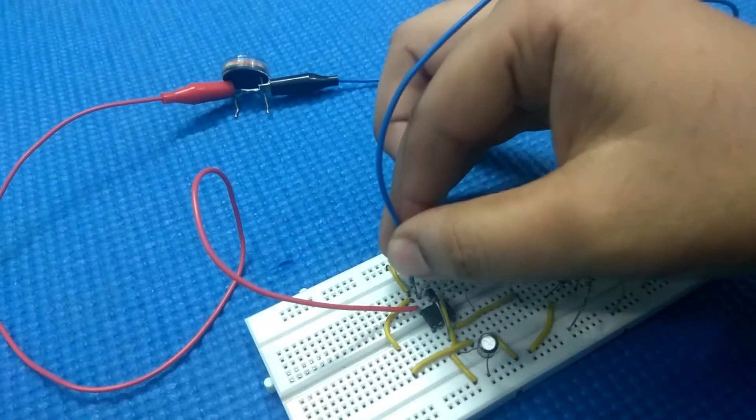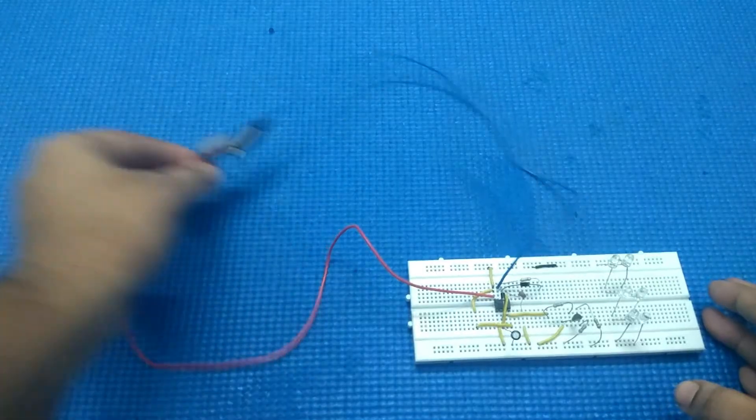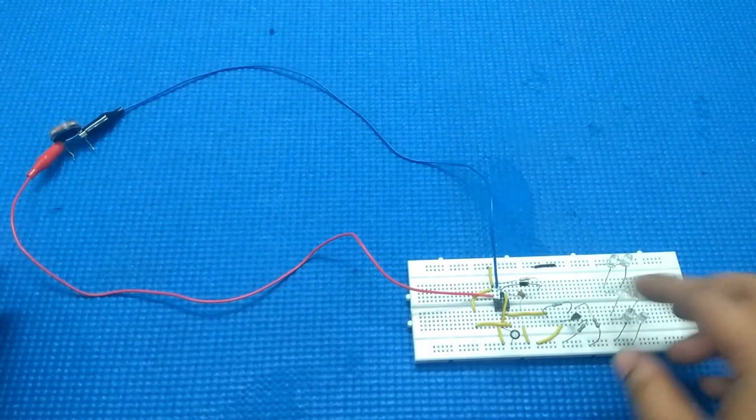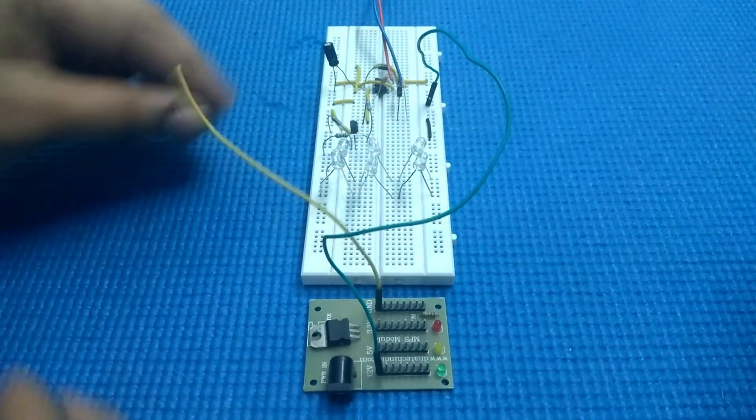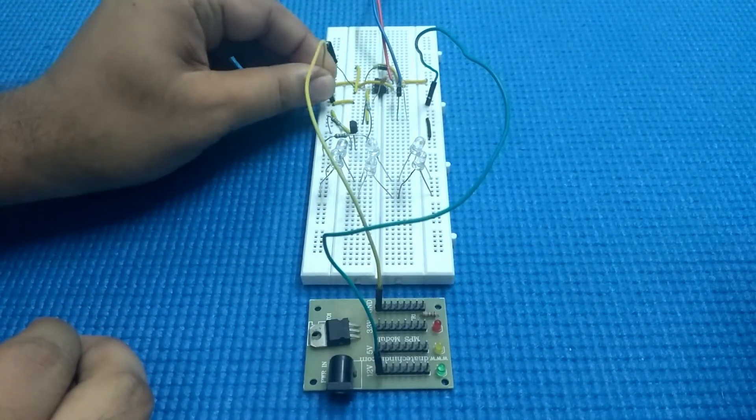Now connect the LDR to our circuit. Always place the LDR in such a way the light from LEDs will not disturb them. Connect the power supply pins and you are all set.